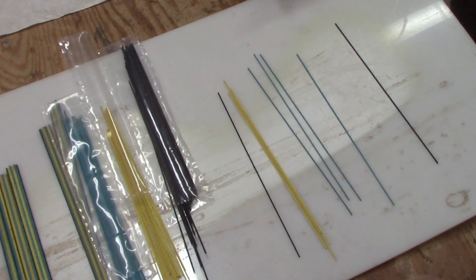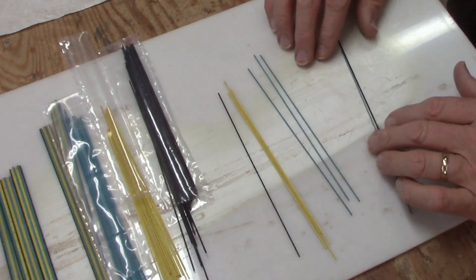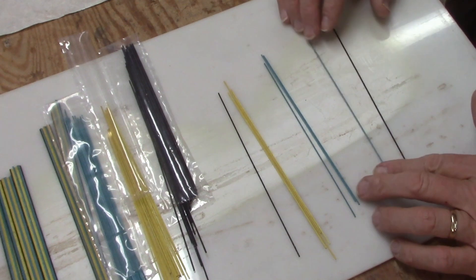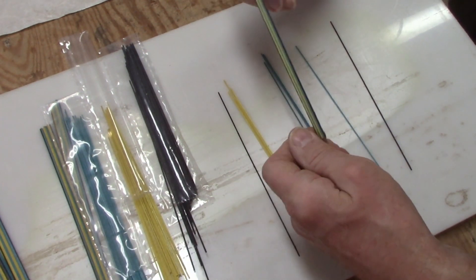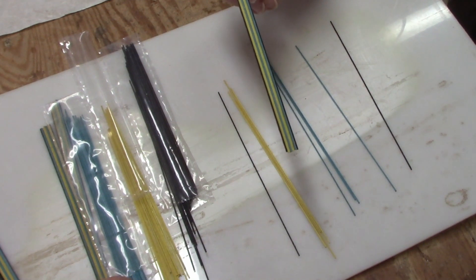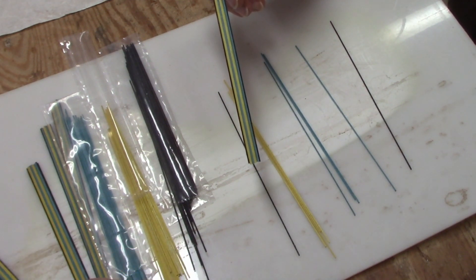I'll show how I glue these together in a second, but once the columns are glued together, this is how they look. This particular pattern is going to be checks of basically blue and yellow.